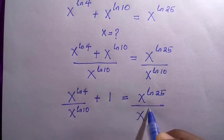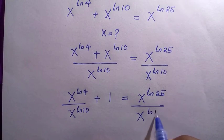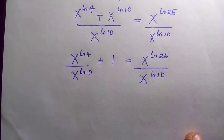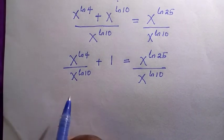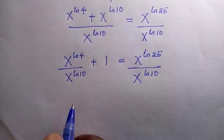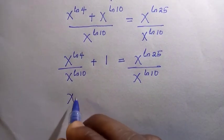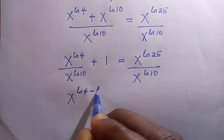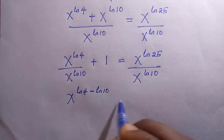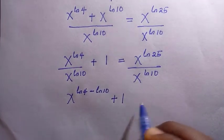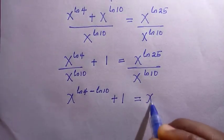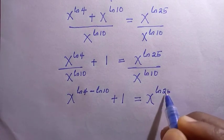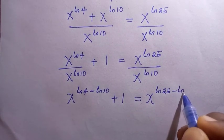Applying the law of indices — since we have a common base and division, the law says we take one base and subtract the powers — we get x raised to the power of ln 4 minus ln 10, plus 1, equals x raised to the power of ln 25 minus ln 10.